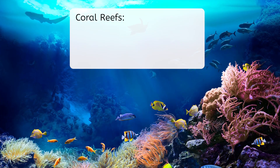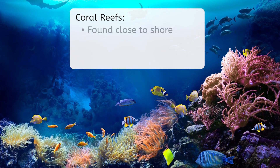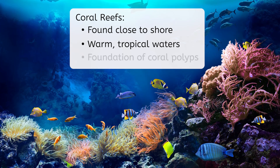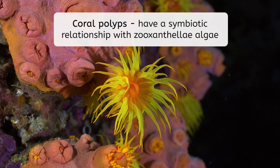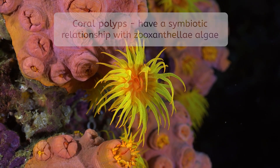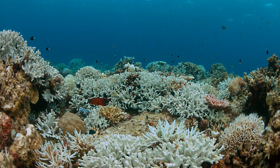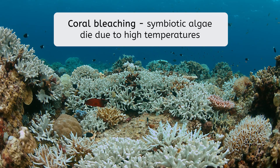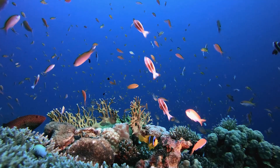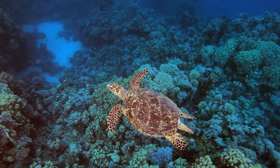The last biome we'll look at today is one of the most fun to explore: coral reefs. These marine habitats are found close to shore in warm, tropical waters. The foundation of coral reefs comes from the coral polyps, invertebrate animals who secrete a hard exoskeleton known as coral. The coral polyps have a symbiotic relationship with a species of algae called zooxanthellae, and depend on this algal species to survive. Unfortunately, rising temperatures put coral polyps at risk of extinction due to the phenomenon of coral bleaching, in which the algae die due to high temperatures. Coral reefs are vital parts of the biosphere, as they are home to fish, sea turtles, crabs, rays, and sea stars.